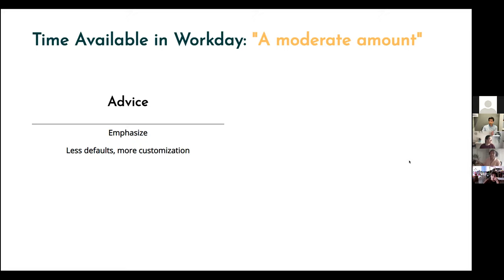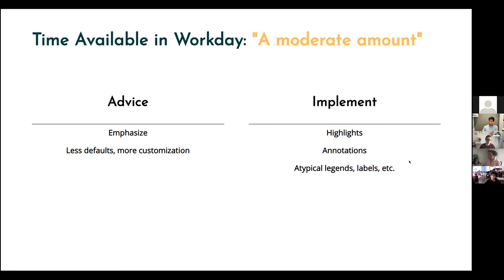If you have a moderate amount of time, first you have to do everything from the previous step to lay down your foundational chart. Then you want to start emphasizing your message — what additional things can you add to highlight it? Rely less on defaults and do more customization to make your chart seem more unique. Things to implement: highlights — if your title says things are increasing, you put a box around it or draw an arrow to it. But then you also need annotations to explain why someone is looking at that point. You can also do atypical legends and atypical labeling.